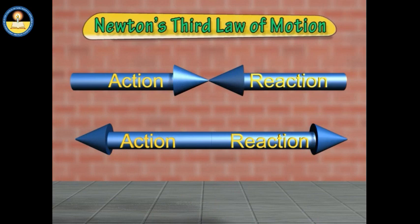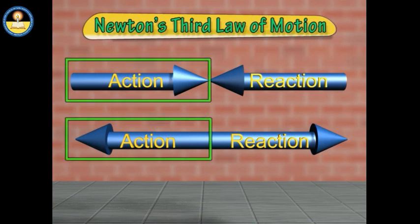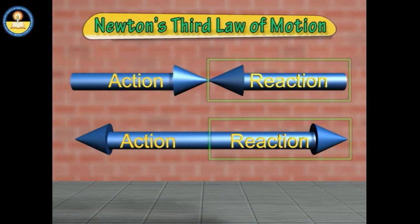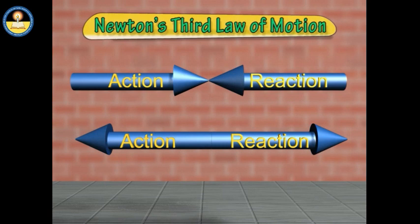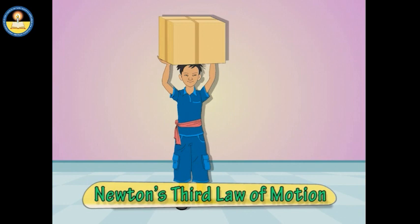This shows that forces always occur in pairs. A pair of forces exerted by two bodies on each other is called an action-reaction pair. Either of the two forces may be called the action, and the other is the reaction. For every action there is an equal and opposite reaction — this is Newton's third law of motion. For example, when a heavy load is put on a porter's head, the load pushes the head downward while the head pushes the load upward. These forces are equal in magnitude but opposite in direction, forming an action-reaction pair.